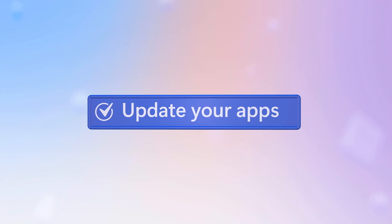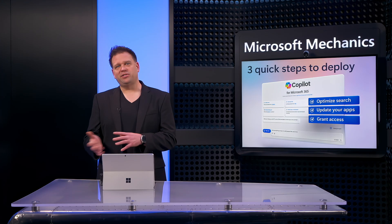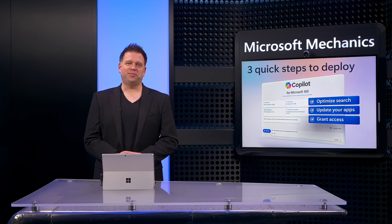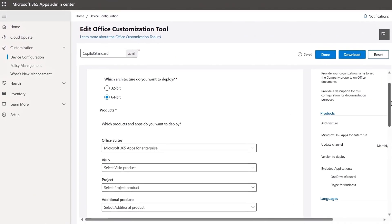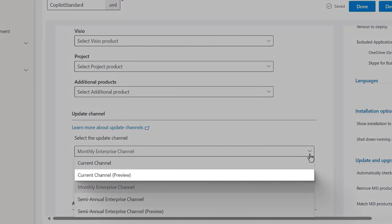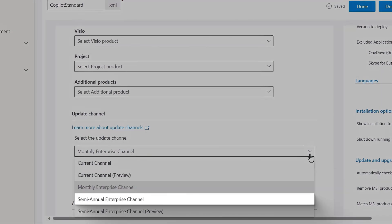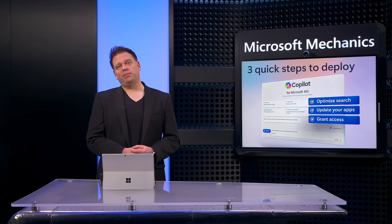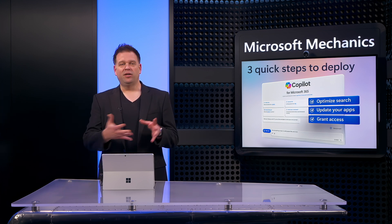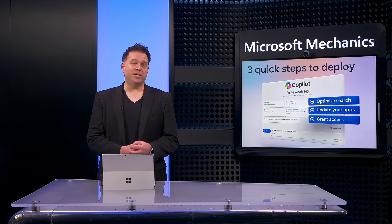Then our next quick step is to update Microsoft 365 apps on your managed devices. This applies to both desktop and mobile apps with integrated Copilot experiences. Starting with your desktop apps on Windows, these need to be running either monthly enterprise channel, current channel, or current channel preview. Note that semi-annual enterprise channel will not get integrated Copilot experiences. If you already have one of the supported update channels in place, then there's nothing to do — you can skip to the next step. Otherwise, you can change to a supported update channel using any policy mechanism that leverages group policy ADMX templates for Office 2016 and newer.